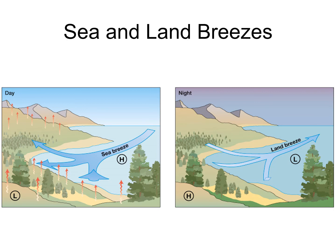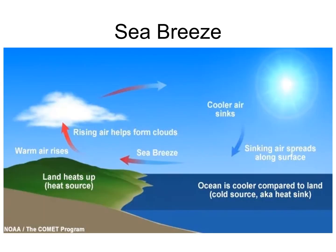Depending on how high the air rises during a daytime sea breeze and how much moisture is in the air, we may actually get precipitation or even cloud cover. The air is rising, and since there's moisture in it, it could give us clouds and even a little bit of drizzle, depending on conditions.